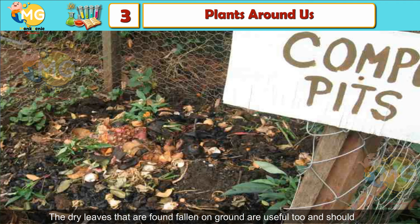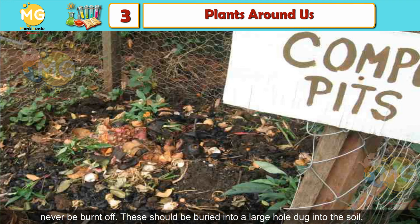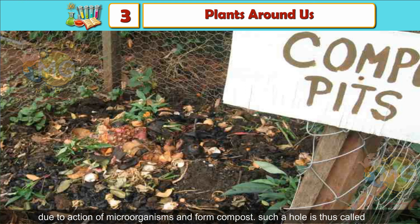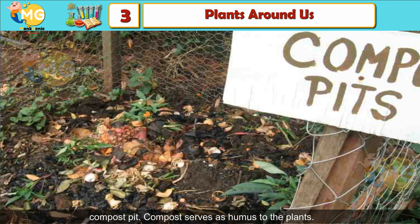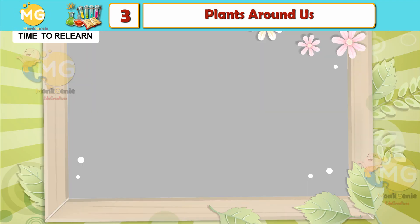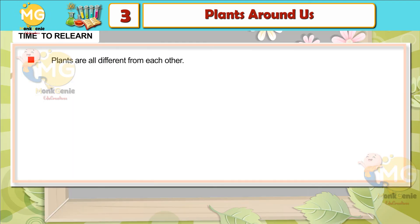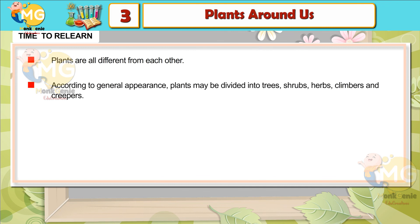Dry leaves found fallen on the ground are useful too and should never be burnt. They should be buried into a large hole dug into the soil along with vegetable wastes and dry flowers. These get decomposed over time due to the action of microorganisms and form compost. Such a hole is called a compost pit, and compost serves as humus for plants.